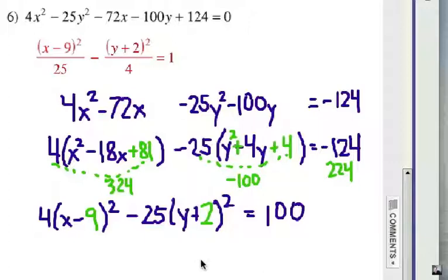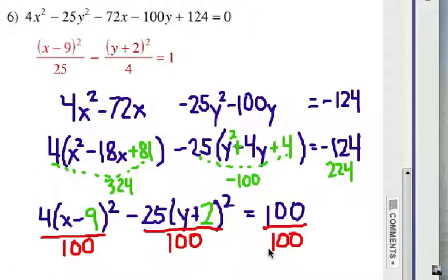All right, we've got to divide each side by 100. Because we want it equal to 1 on the right-hand side. Now, if I do that, remember that I can factor out a 4 out of each of those, which gives me the 25 underneath the x group.